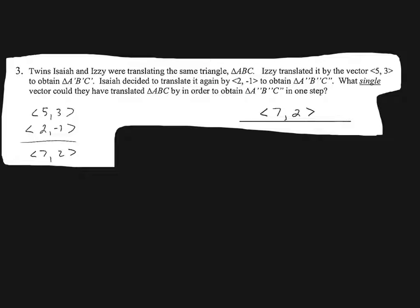Now this is more of a composite vector question, or composite translation. So you've got Isaiah and Izzy are translating a triangle. Izzy translates it by the vector 5, 3. So moving to the right 5 and up 3. Then what happens is Isaiah decides to translate it again by the vector 2, negative 1. So where does this thing go now? Now it goes to the right 2 and down 1. So if you go to the right 5 and then to the right 2, I think you've gone to the right 7. And if you went up 3 and then down 1, then 3, right, that positive 3 minus 1 would give you an up 2 overall.